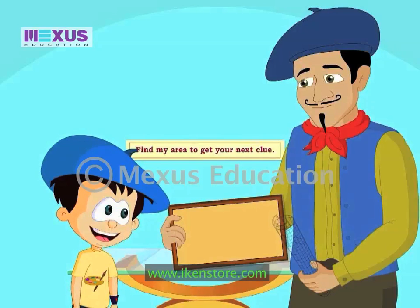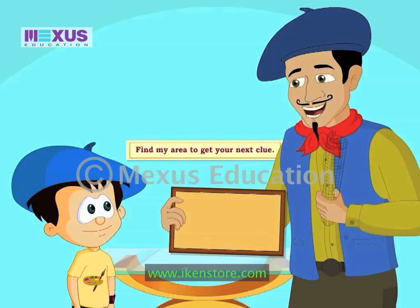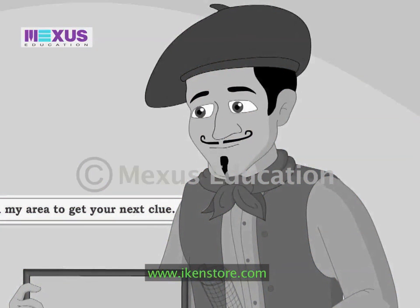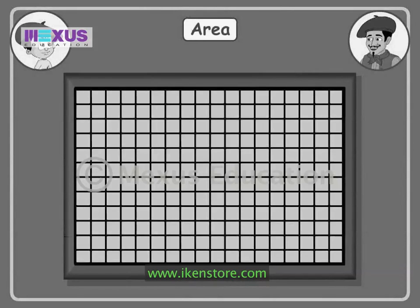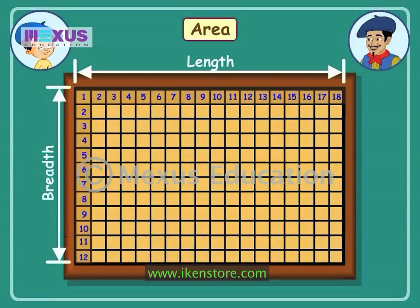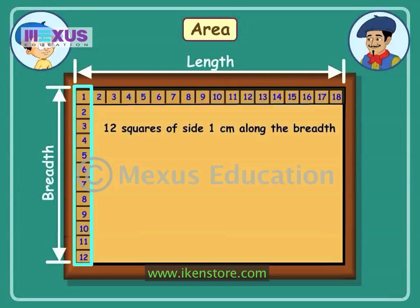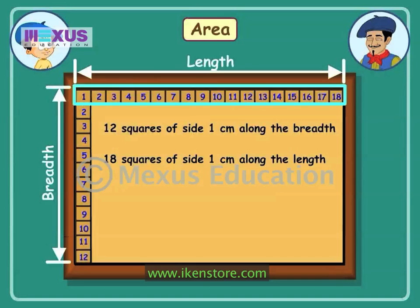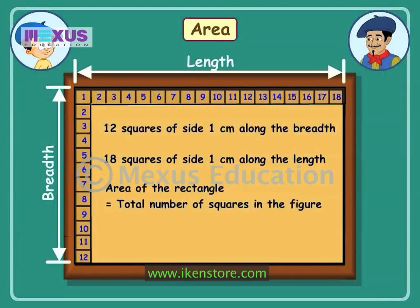But this painting is quite big. It's boring to count so many squares. We don't have to count all the squares. We'll use a simpler method to calculate the area of this painting. We'll count the squares only on the sides. To know the area of the painting, we need to know the total number of squares covering the whole painting. We'll find out the total number of squares by multiplying the squares along the length of the painting with the number of squares along the breadth. There are 12 squares along the breadth and 18 squares along the length. So the total number of squares covering this painting is 18 multiplied by 12, that is 216.